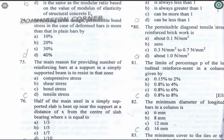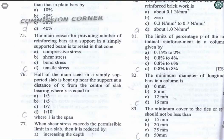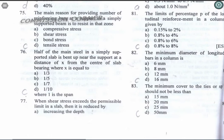Question 76: Half of the main steel in a simply supported slab is bent up near the support at a distance x from the center of the slab bearing, where x is equal to one upon seven. Option C is the correct answer.